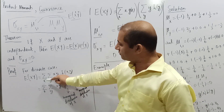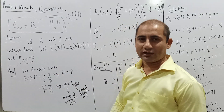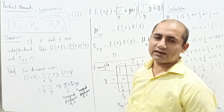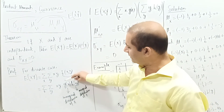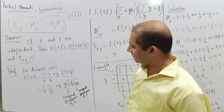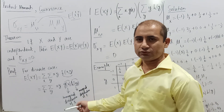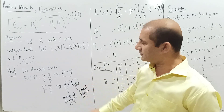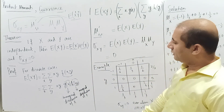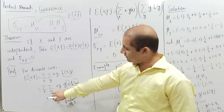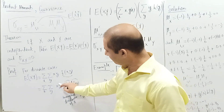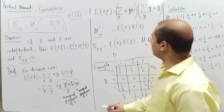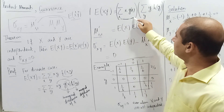For the discrete case, E[XY] is the double summation over X and Y of XY times the joint probability distribution F(x,y). When X and Y are independent, F(x,y) factors as G(x) times H(y), where G(x) is the marginal distribution of X and H(y) is the marginal distribution of Y. This allows us to separate the double summation.